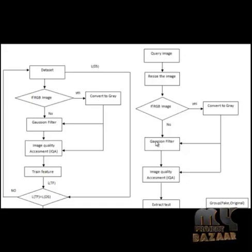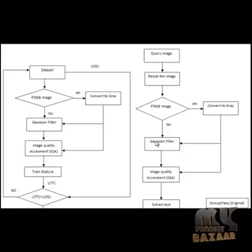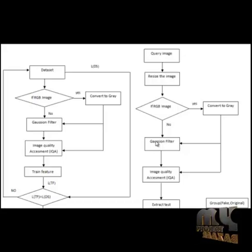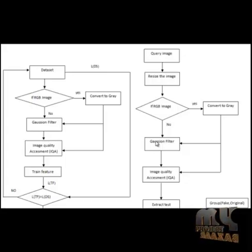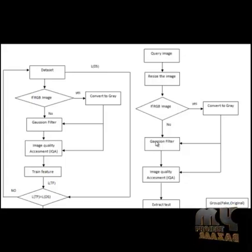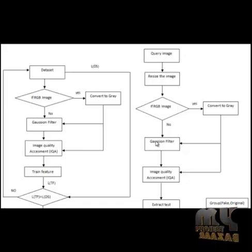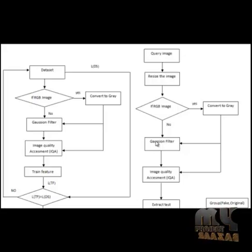After the RGB process, the image goes to the Gaussian filter process. We design the Gaussian filter with a sigma value of 0.5, 0.3, or 0.4, and a matrix size of 3×3, 5×5, or 4×4. The Gaussian filter then filters the resized image.